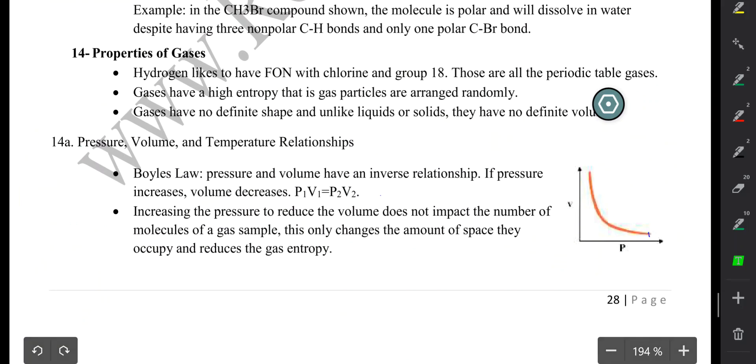So gases, there are a few gases on the periodic table. A nice way to remember what the gases are on the periodic table, remember that hydrogen likes to have FON with chlorine and group 18. So at standard temperature and standard pressure, these are the gases that are present on the periodic table.